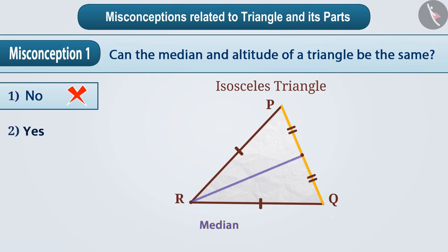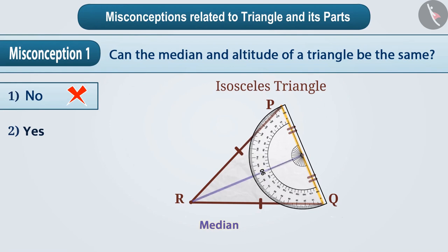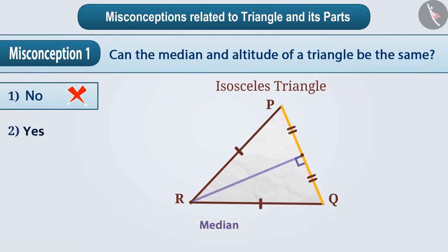If we place the protractor properly at the intersection of this line segment and the side PQ, then we know that this line segment makes an angle 90 degrees on PQ. Since this line segment is a perpendicular from the vertex R on its opposite side PQ, we can call it an altitude.